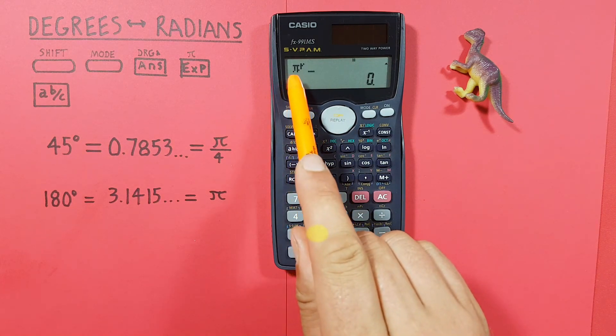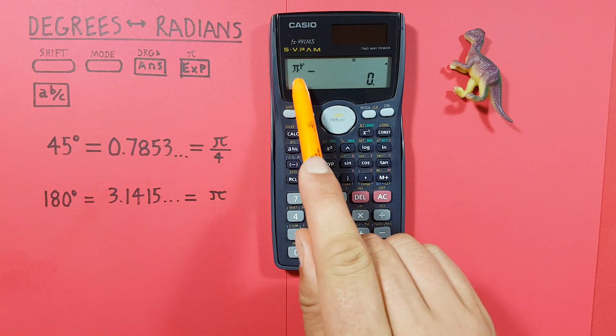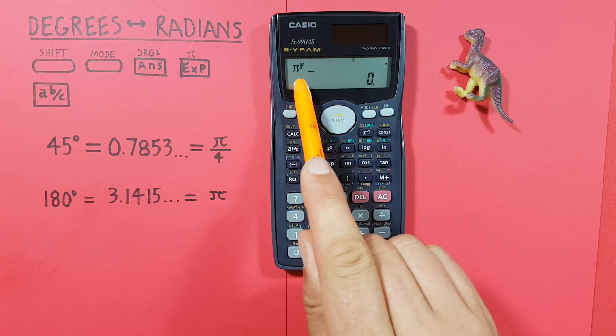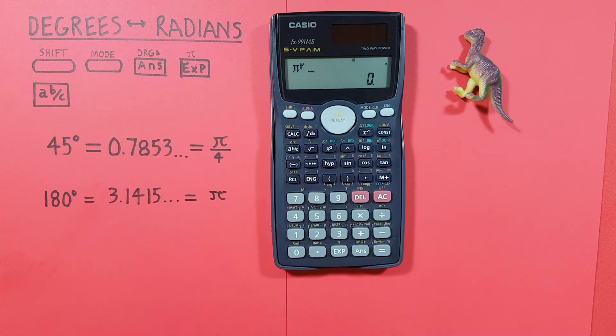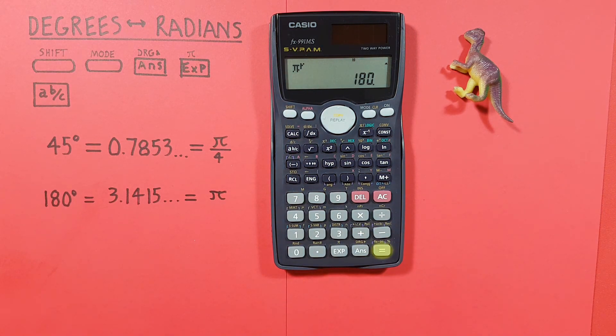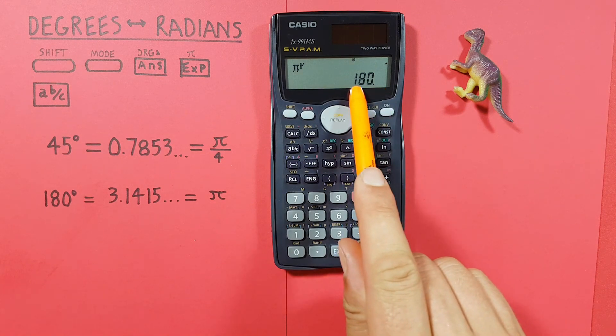We see pi R, which is telling us that's a radian. Press equals and we get a result of 180 degrees.